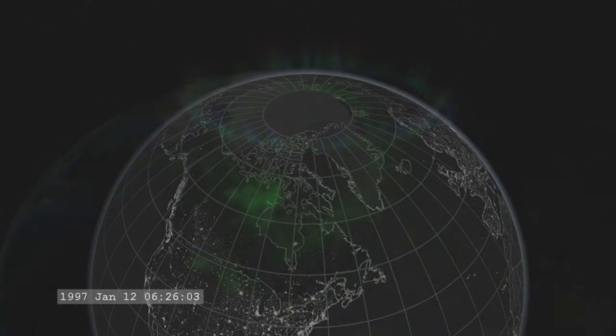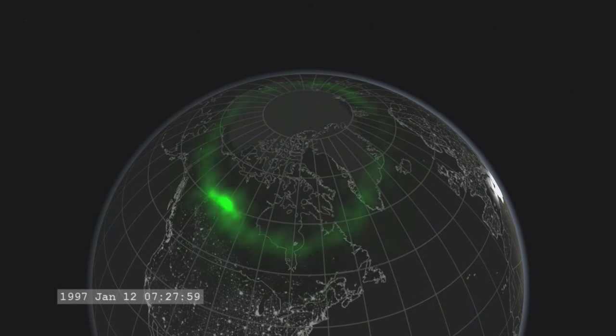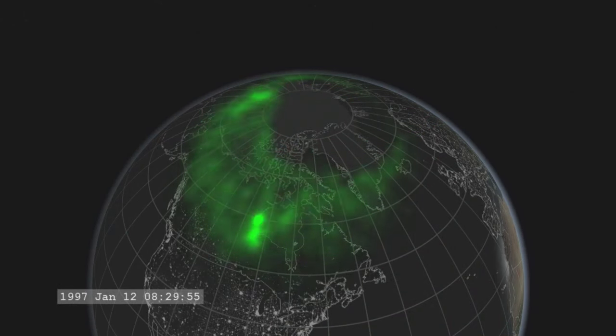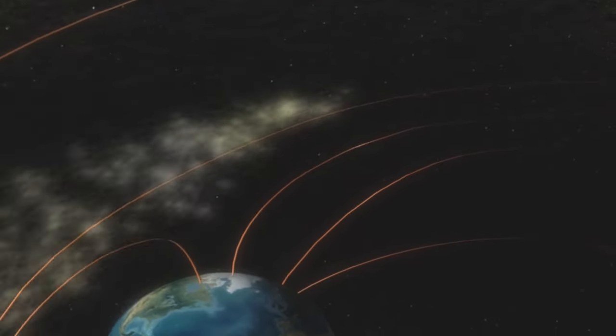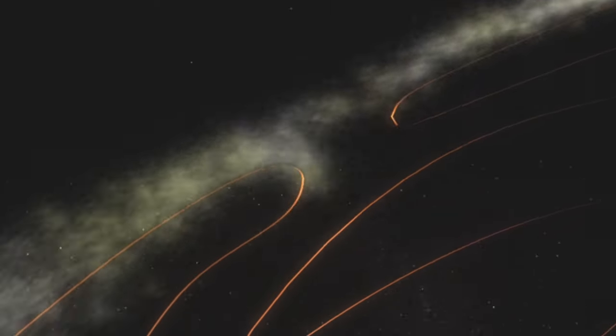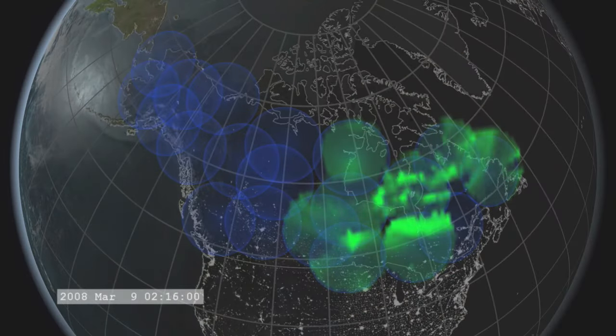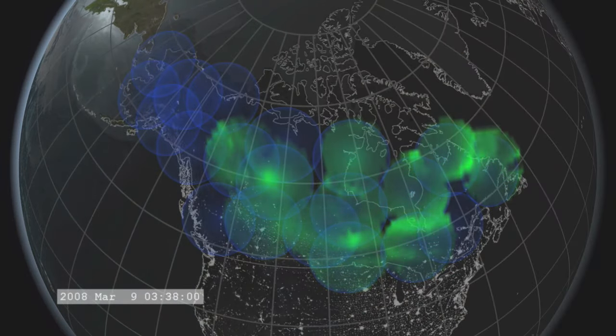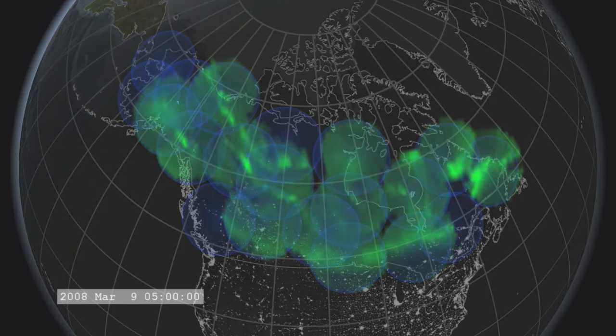Every once in a while, a geomagnetically disturbed period known as a substorm occurs, and the auroras brighten and extend poleward. Scientists wanted to know more about these substorms. Why are electrons being accelerated so explosively into the Earth's atmosphere? What caused a single auroral ribbon to break into several ribbons or clusters of ribbons that race north and south?